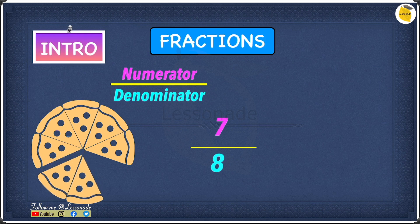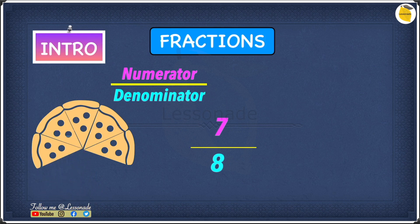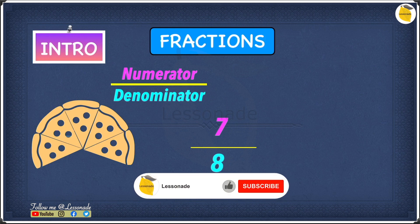Now let's say someone else comes and takes 2 more slices, leaving us with only 5 slices. When we had 7 slices our numerator was 7, but because we only have 5 slices now, the numerator is 5, which means the fraction is 5 over 8.